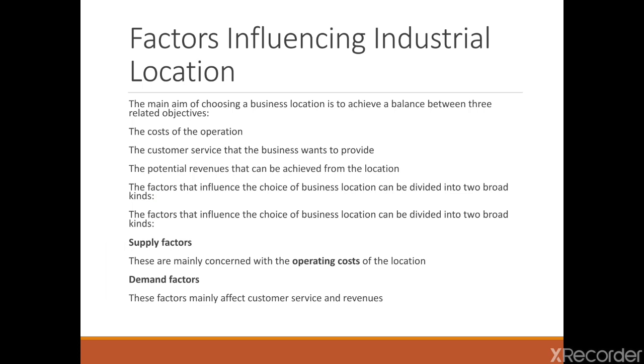Factor Influencing Industrial Location: The aim of choosing business location is to achieve balance between three related objectives: to minimize the cost of operation, to acquire more and more consumer services to supply their wants, and the potential revenue that can be achieved from the location. The factors that influence the choice of business location can be divided in two broad categories. The first is supply factors that are mainly concerned with the operating cost. On the other hand, demand factors which are affected by the customer services and revenue. We are going to start with the supply factor.